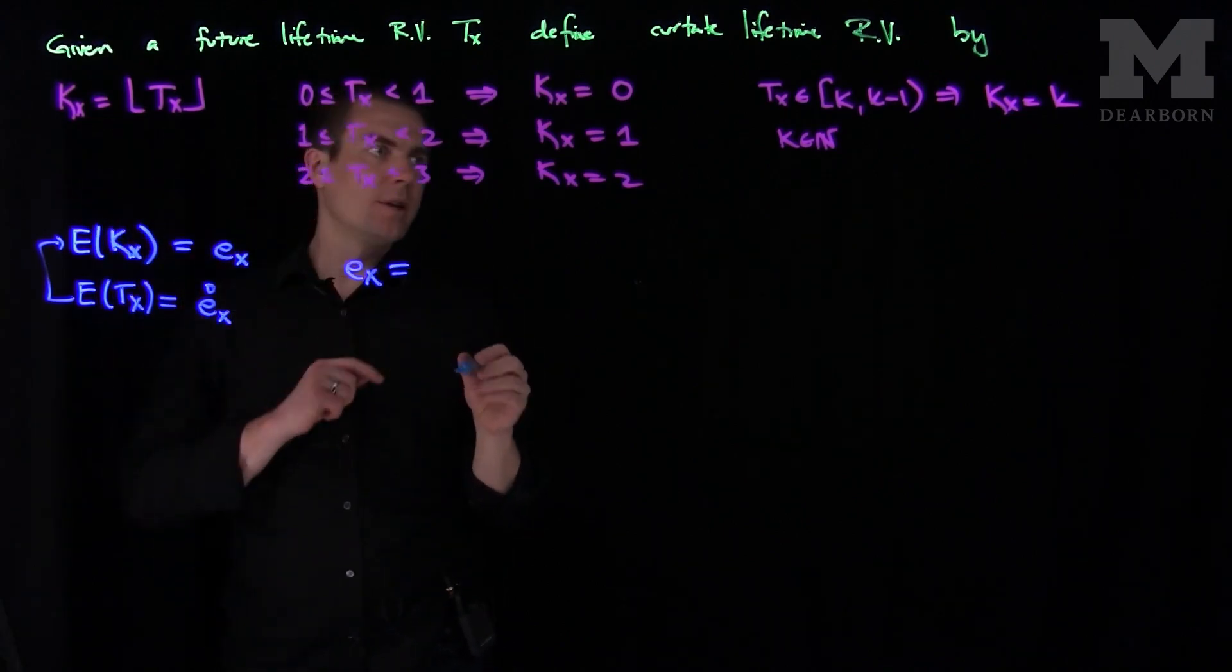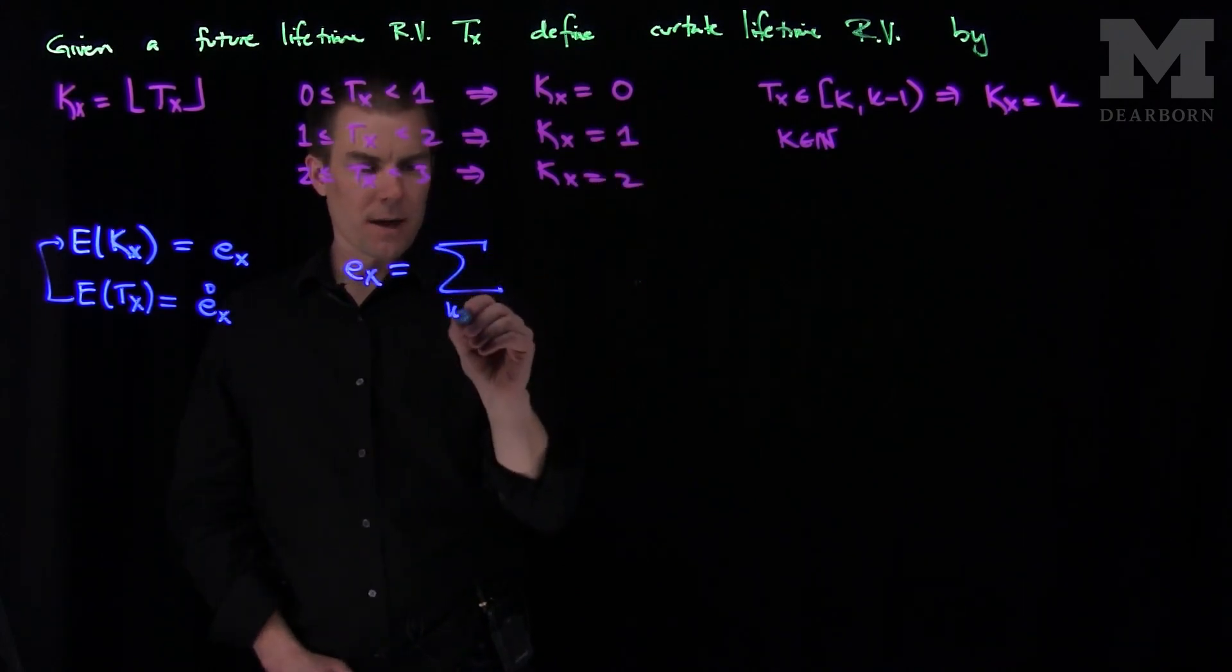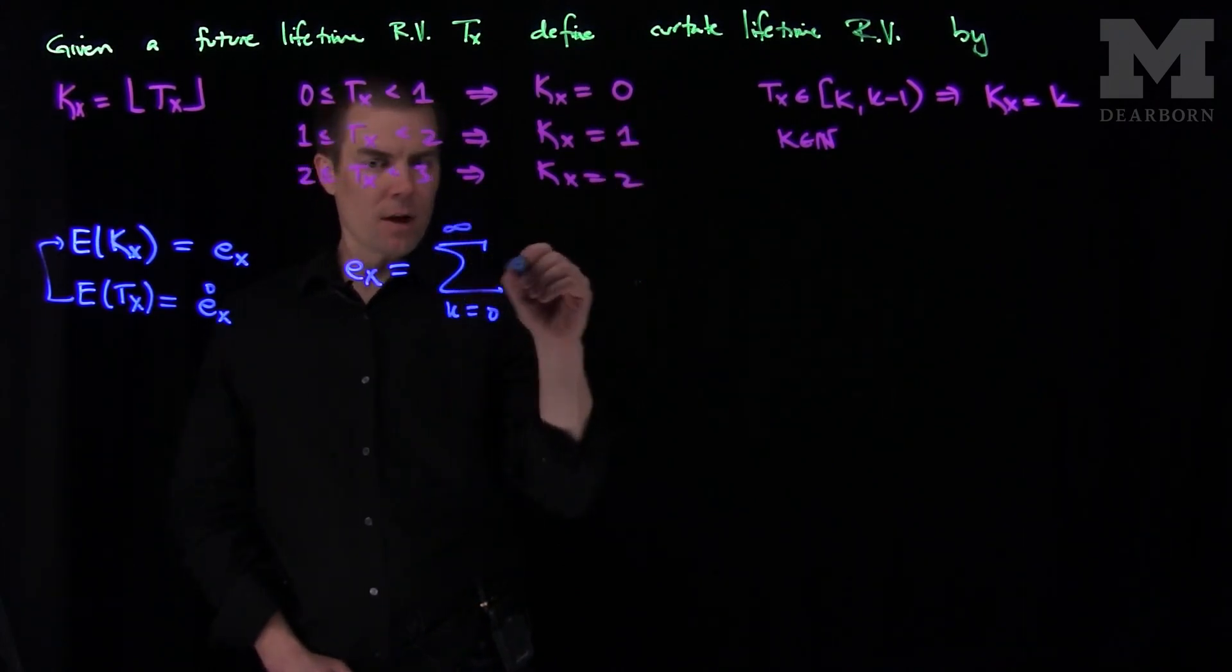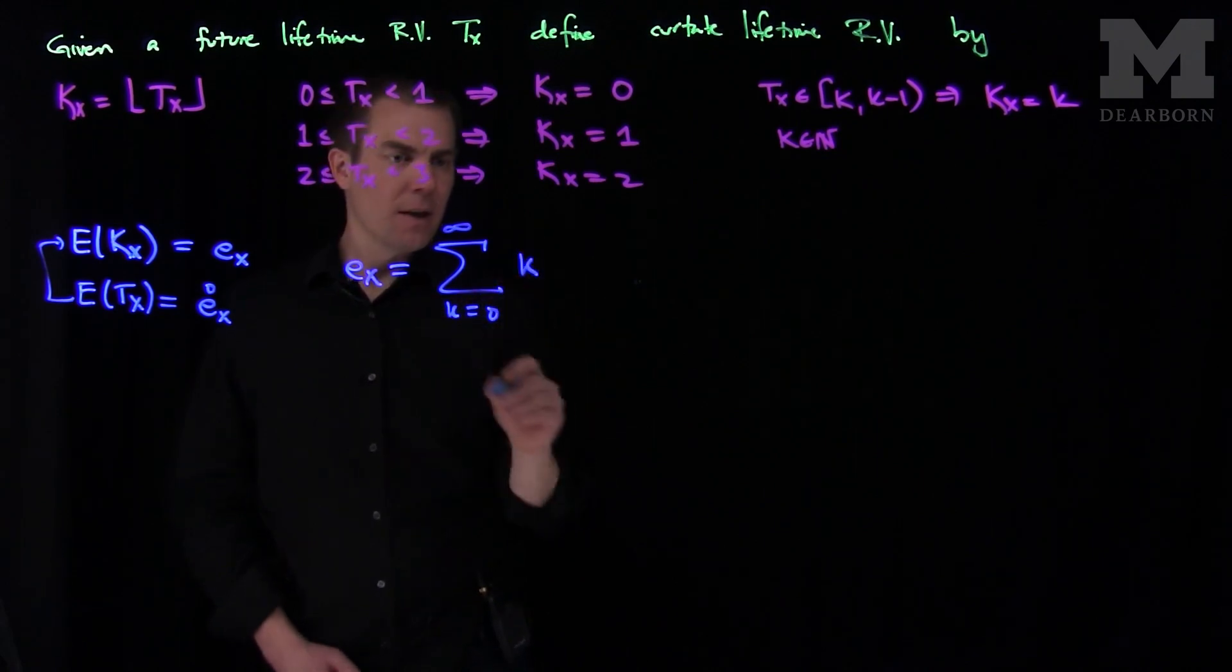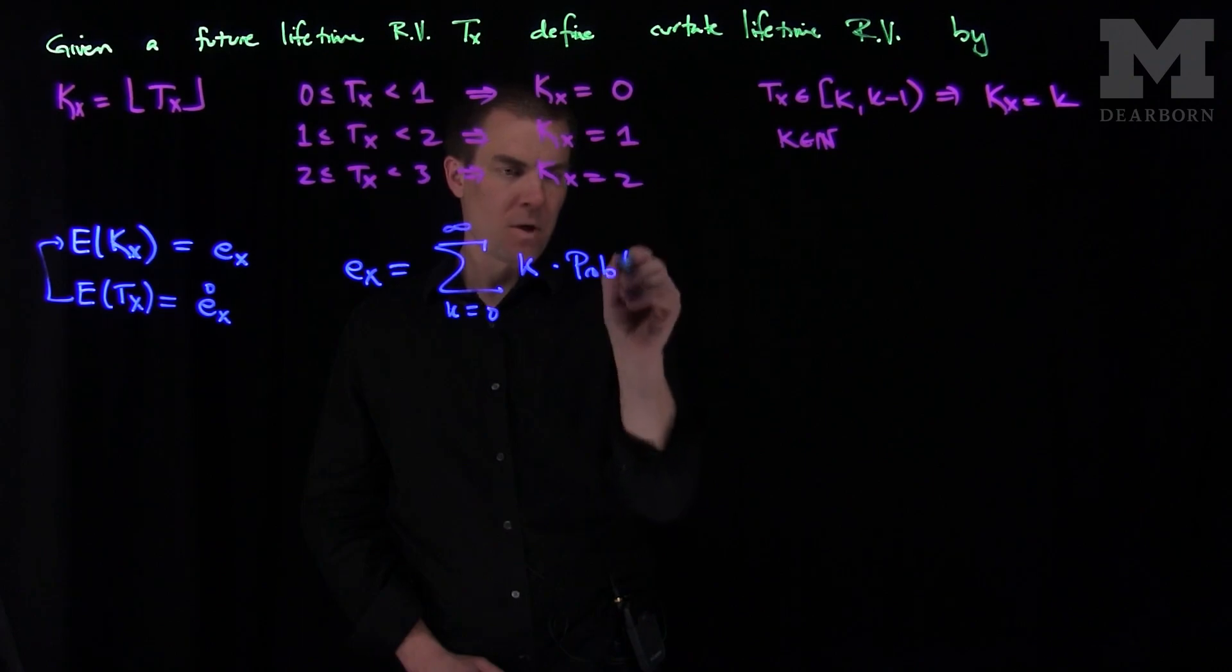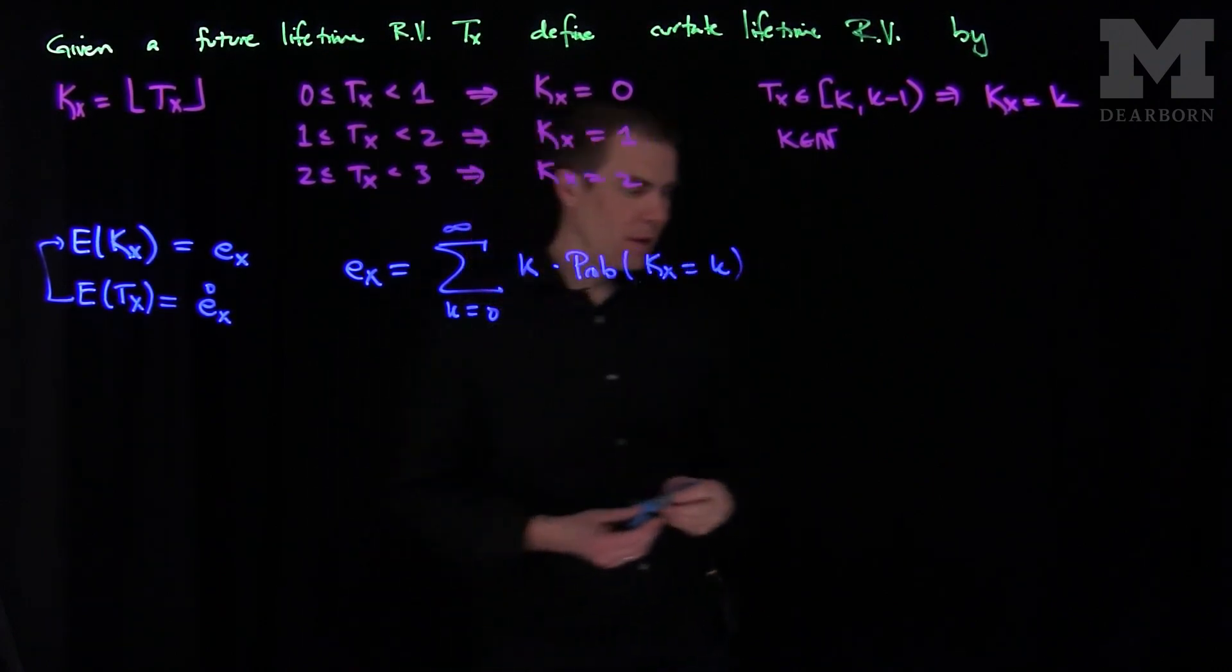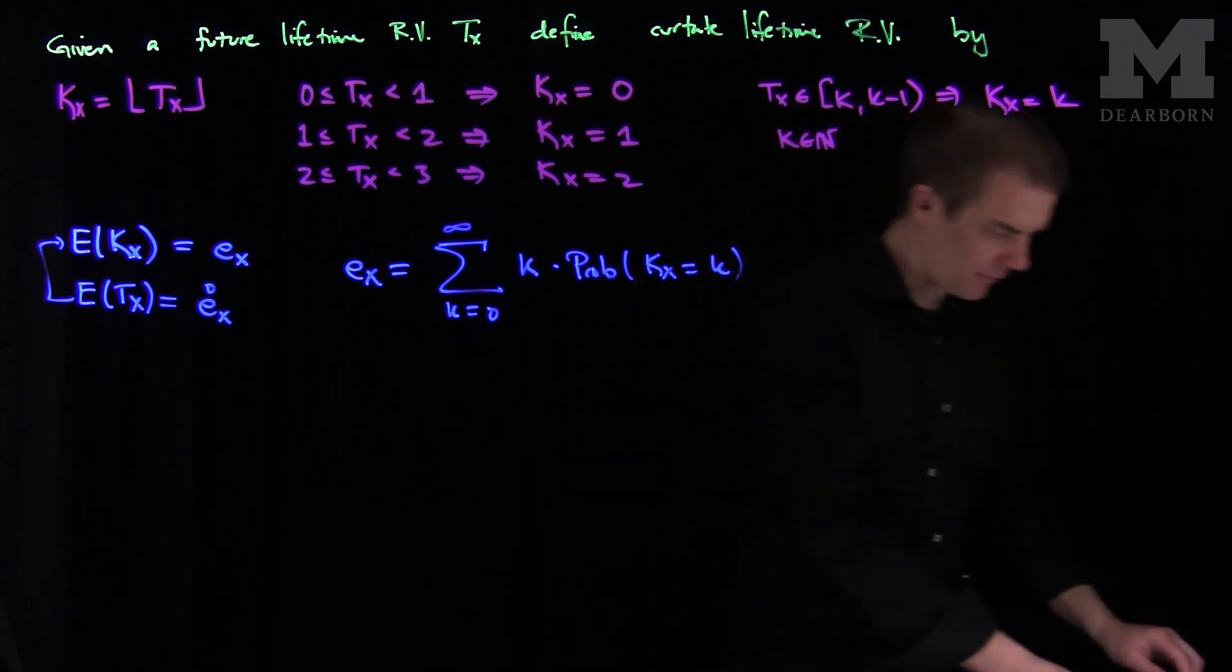We have that e x will be, remember that k only takes on integer values from 0 to infinity, so this will be the sum, k goes from 0 to infinity, to compute the expected value it's k times the probability that the curtate life is equal to k. Let's examine this probability carefully and see what we get.